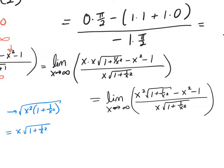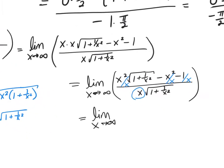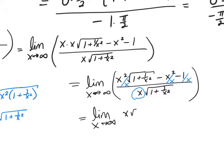Now I'm going to divide everything by x, because this x in the denominator is the problem. When I divide each term by x, I get the limit as x approaches infinity of x times (1 + 1/x²) minus x minus 1/x, all over the square root of (1 + 1/x²).